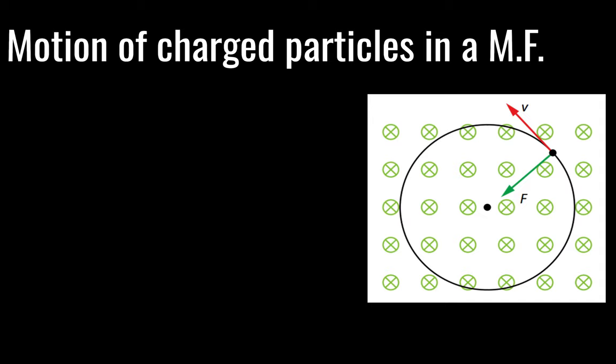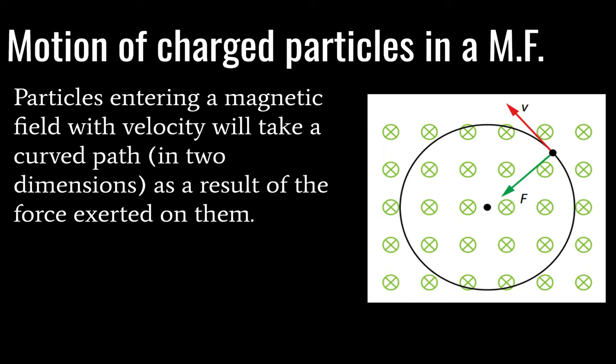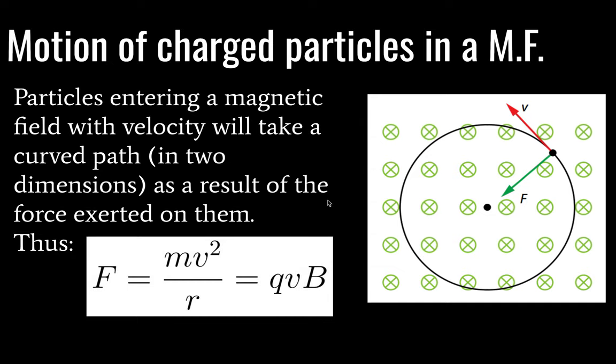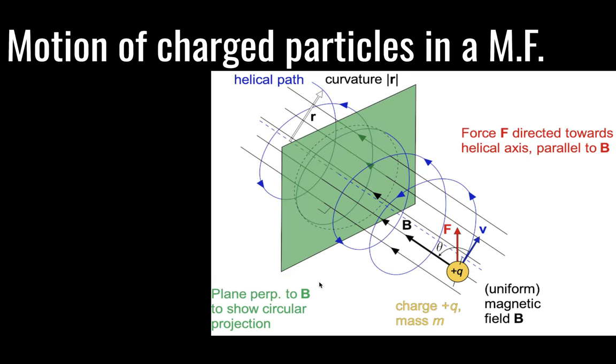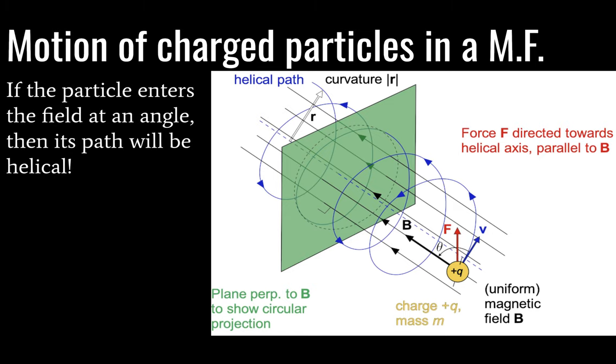We're going to look at motion of charged particles in a magnetic field. Again, I should probably rethink that abbreviation. Anyway, particles entering a magnetic field with velocity will take a curved path in two dimensions. And this is due to the fact that a force is being exerted on the particle. So this means conveniently we can equate these two things. You may recognize this from topic six as centripetal force. However, technically this is topic five. So perhaps you don't. In any case, this is centripetal force. This is QVB, which we've already seen. Charge, velocity, magnetic field strength. So there is a possible scenario here where our particle could enter the field at an angle and in that case its path is going to be helical. So here we have a magnetic field in this direction, which is given by B. But our path into the field is at this angle theta. And if theta is not perpendicular to the field, then what we get is the spiraling, what we call a helical path.